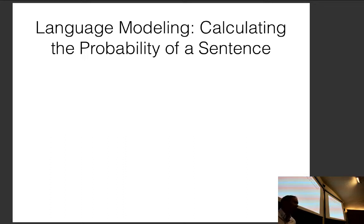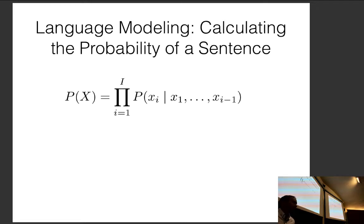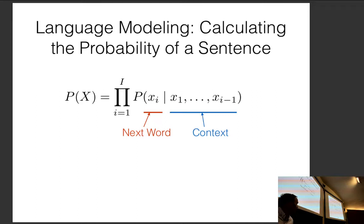Language modeling conflates syntax, semantics, and frequency together. 'Hello' and 'Jane went to the store' are both valid sentences, but 'hello' is more frequent so it would get a higher language model probability. We calculate the probability of a sentence X from left to right, taking previous words and predicting the next word. This is called an autoregressive model.